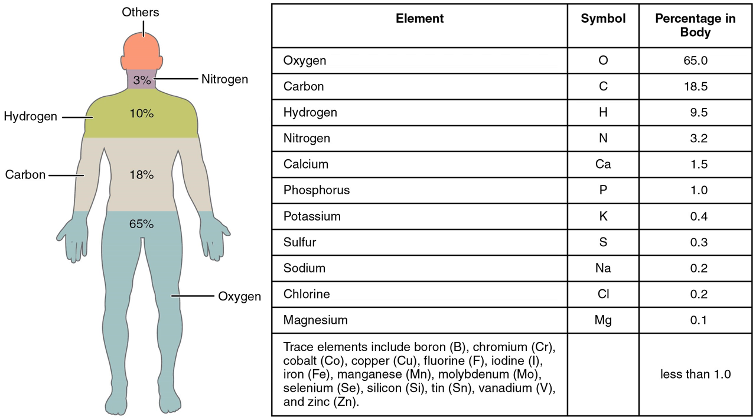Almost 99% of the mass of the human body is made up of six elements: oxygen, carbon, hydrogen, nitrogen, calcium, and phosphorus. Only about 0.85% is composed of another five elements: potassium, sulfur, sodium, chlorine, and magnesium.